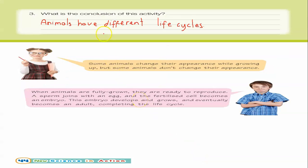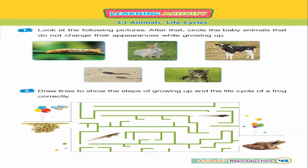Page 44: what is the conclusion of this study? What can you tell about the life cycle of animals? Animals have different life cycles. Page 45: look at the following pictures. Circle the baby animals that do not change their appearances while growing up — rabbit, cow, and cat.